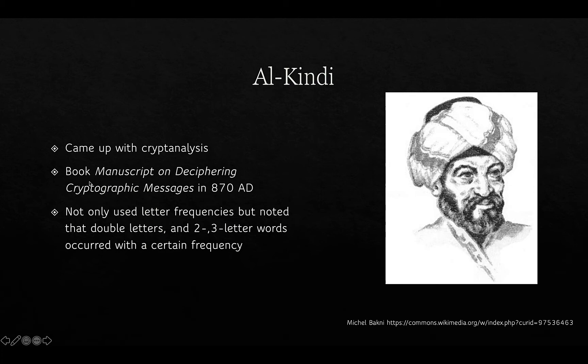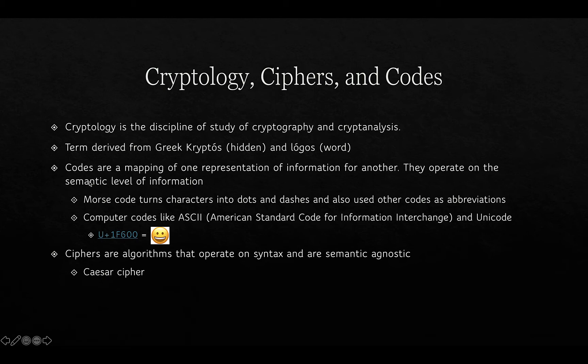The person who developed cryptanalysis was an Arab called Al-Kindi, who wrote a book called The Manuscript on Deciphering Cryptographic Messages in 870 AD. He not only used letter frequencies but also noted that double letters and two-to-three letter words — digrams and trigrams — occurred with a certain frequency as well.